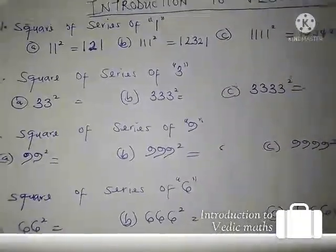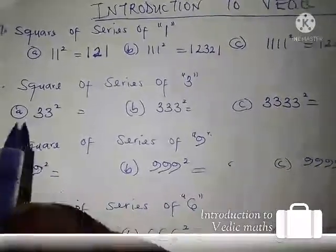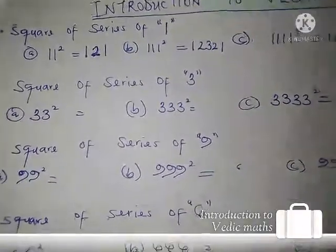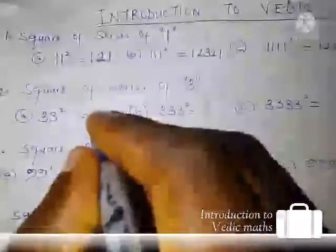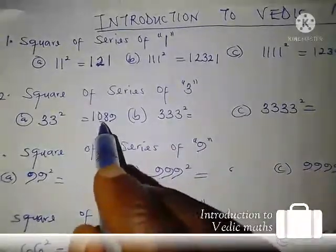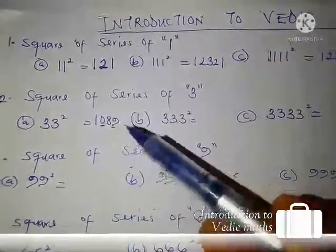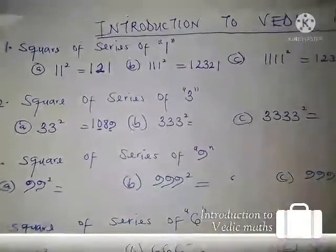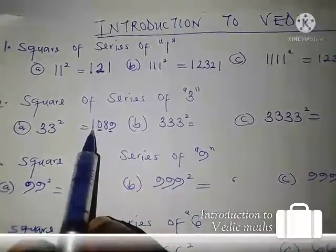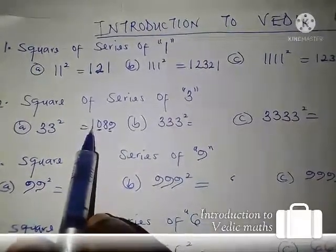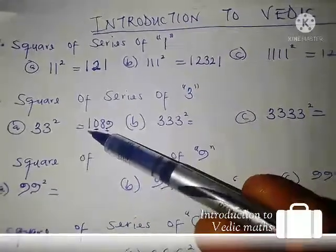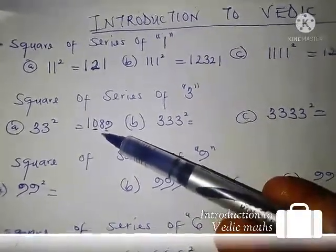Now we are dealing with a series of threes. We know that 3 squared is 9, which we can represent as 09. And 33 squared gives 1089 — you can see that '09' is here. So 09 will be constant whenever you have the square of a series of threes. You will be changing the numbers of ones and eights. For two digits (33), we have only one '1' and one '8'.